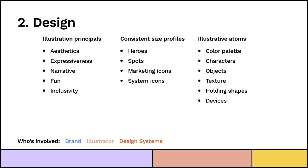Step two: Design. This is the part where the drawing begins. You want to determine your illustration principles — and that means aesthetics, but it's a lot more than aesthetics. You want to determine expressiveness: how do we create narrative, how fun are illustrations, how appropriate is fun? And then inclusivity — that should always be one of your principles, that being inclusive is a principle of your illustrations in the first place. Create consistent size profiles, because otherwise your illustrator doesn't know what size to build things and they might build something the wrong size. And then all of the illustrative atoms.